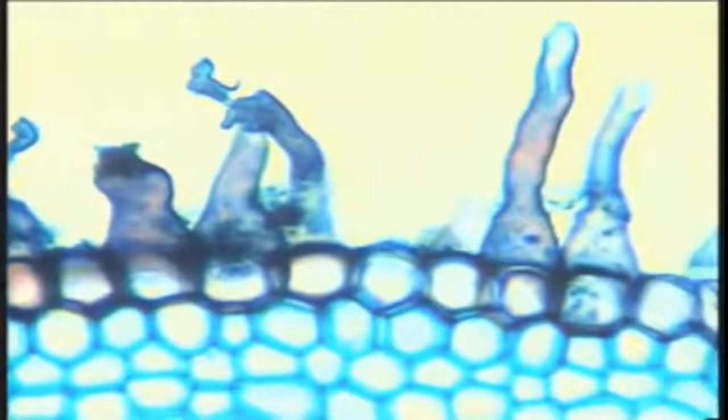But some root cells have an unusual feature that serves a plant in other ways. These cells have root hairs, delicate projections that can absorb water and minerals from the soil.